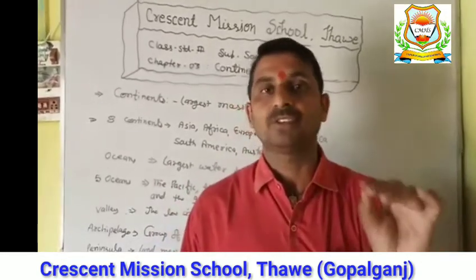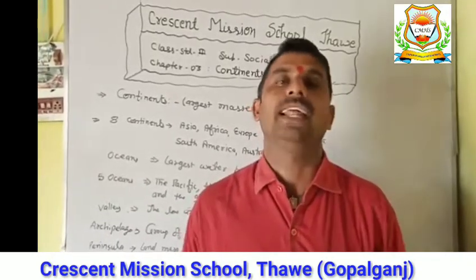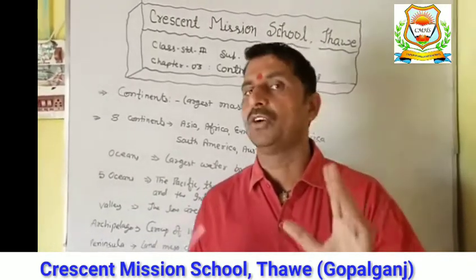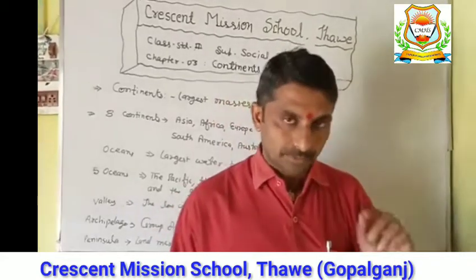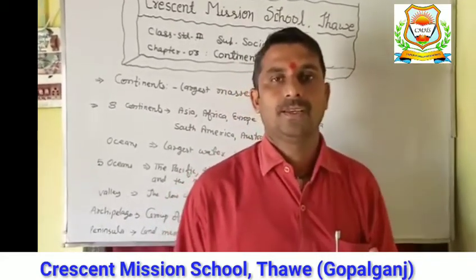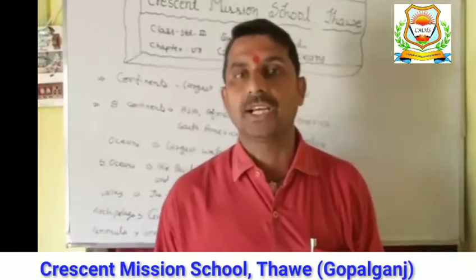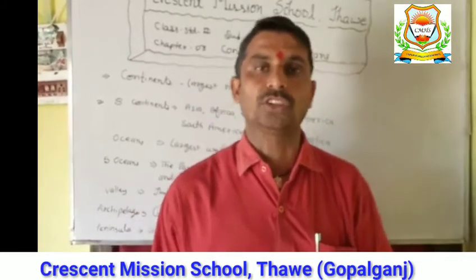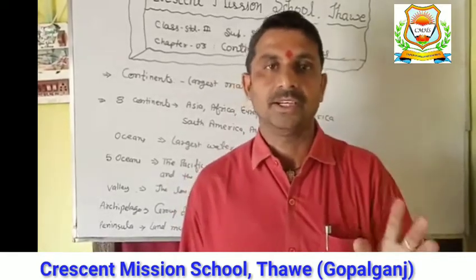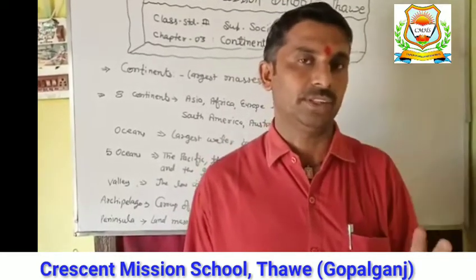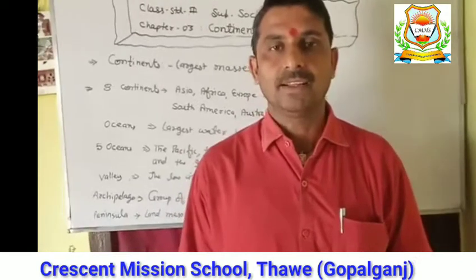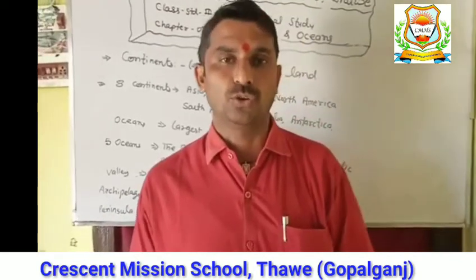The largest masses of land are called continents, and we have seven continents on the Earth: Asia, Africa, Europe, North America, South America, Australia, and Antarctica. When we think about oceans, the largest water bodies are called oceans.